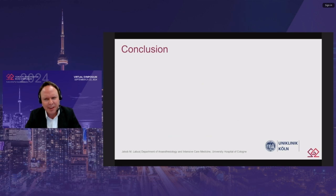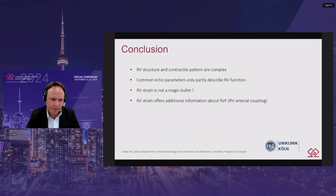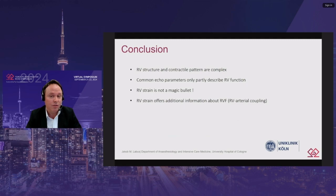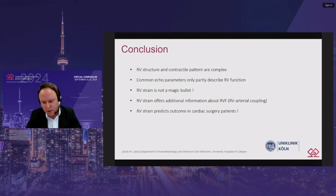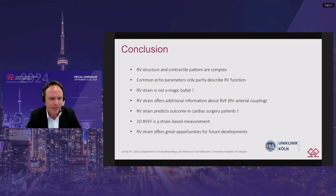To summarize: the right ventricular structure and contractile pattern are complex, and common echo parameters only partly describe right ventricular function. Right ventricular strain is not a magic bullet, but it offers additional information about right ventricular function — in particular right ventricular arterial coupling — and can predict outcome in cardiac surgery patients. Remember that 3D right ventricular ejection fraction, considered the reference method, is itself a strain-based measurement. Last but not least, right ventricular strain offers great opportunities for future developments.